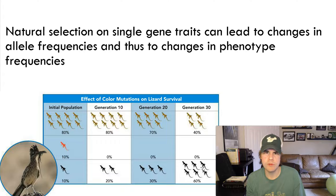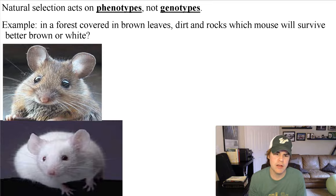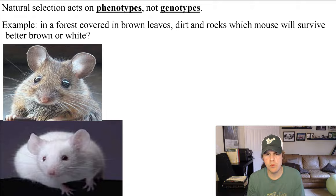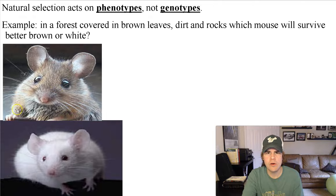Lizards are cold-blooded, meaning they regulate temperature via sunlight and shade. Black lizards could potentially absorb more heat and have more energy necessary to escape capture — that's hypothetical here. Natural selection acts on phenotypes: if you're a hawk hunting mice in a forest, you'd spot the white one first. The hawk isn't looking at DNA — it sees what it can physically see, so it goes for the white mouse, and over time this affects the population's evolution.